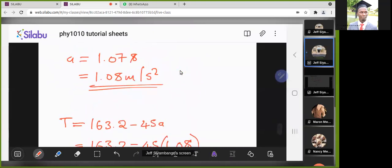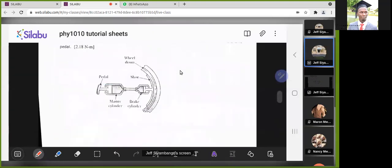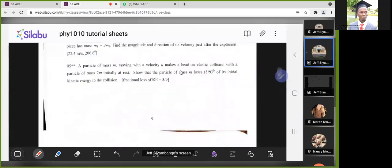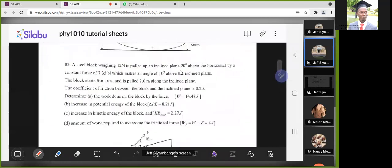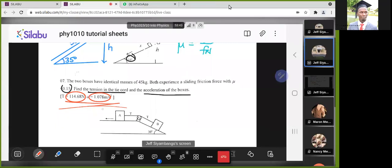Let's see if this agrees with what we found. We have 1.08 and 115. Does it agree with what we've been given? Exactly what we found. 1.078 meters per second squared as the acceleration and 114.68 newtons as the tension. So this is how you work out this question.